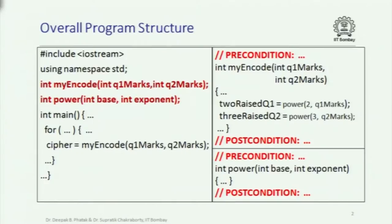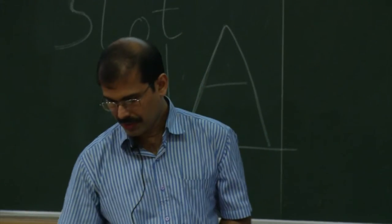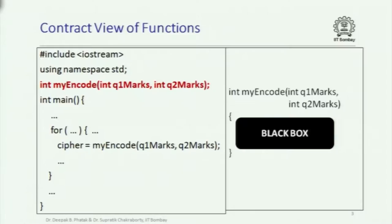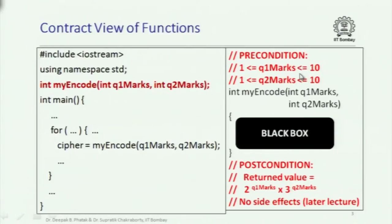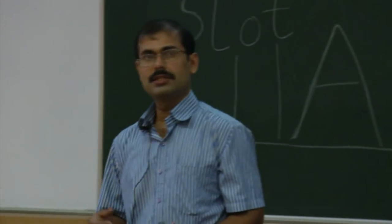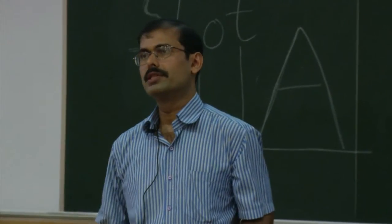The functions are not recursive — the same function is not calling itself. However, one function can call another function. A function encapsulates a computational subtask, gives it a name, and allows parameters to be passed to it. The contract view of functions is that when you are using a function, you may ignore how the function is doing what it is supposed to do, as long as you know what the function expects you to respect, and what it guarantees if you respect its pre-condition.